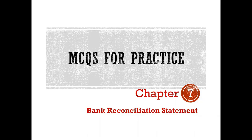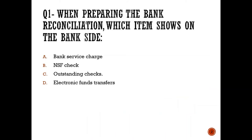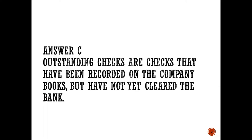Multiple choice questions for practice — chapter number seven, bank reconciliation statement. Question number one: When preparing the bank reconciliation, which item appears on the bank side? A, bank service charge; B, NSF check; C, outstanding checks; or D, electronic fund transfer. The correct answer is C — outstanding checks. Outstanding checks are checks that have been recorded on the company's books but not yet cleared by the bank, so they are already recorded by the company but not yet by the bank, and therefore appear on the bank side.